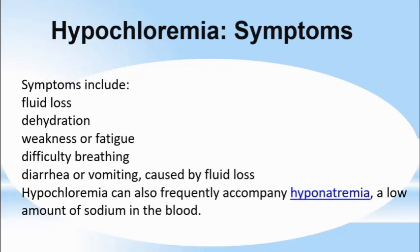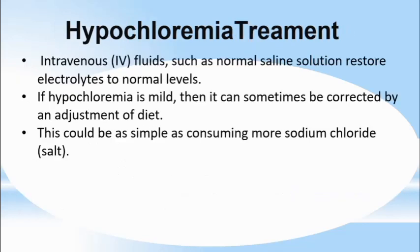Symptoms of hyperchloremia include fluid loss, dehydration, weakness or fatigue, difficulty in breathing, and diarrhea or vomiting caused by fluid loss. Hyperchloremia can also frequently accompany hyponatremia, a low amount of sodium in the blood. It can be treated with intravenous fluids such as normal saline to restore electrolytes to normal levels. If hypochloremia is mild, it can sometimes be corrected by an adjustment of diet — as simple as consuming more sodium chloride, the table salt commonly used in food preparation.